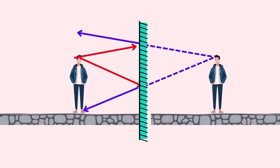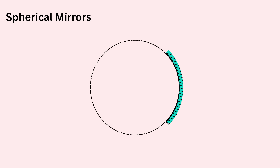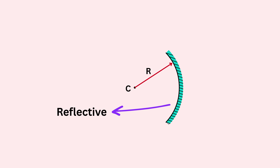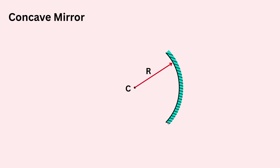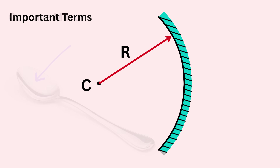Now let us talk about concave mirrors. Just like flat mirrors, there are also curved mirrors called spherical mirrors. A spherical mirror is made by cutting a piece from the surface of a sphere. That sphere has a center called the center of curvature, denoted C, and a radius called the radius of curvature, R. If the inner curved surface of such a cut piece is shiny, we call it a concave mirror. To imagine one, just look at the inner side of a spoon — that curved surface acts almost like a concave mirror.